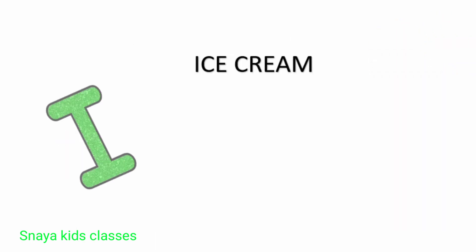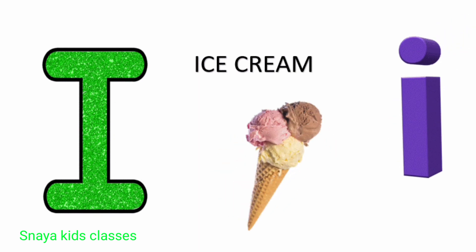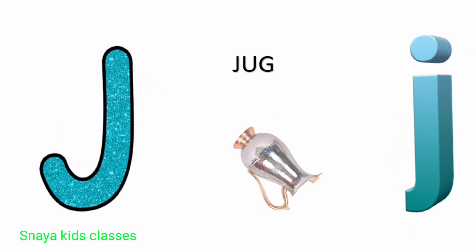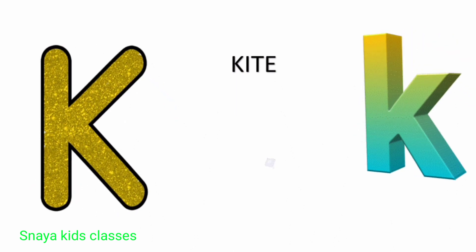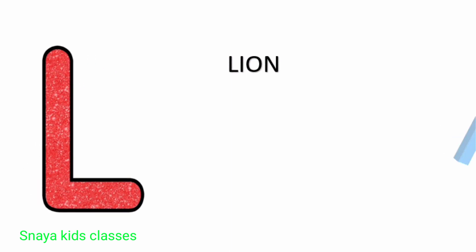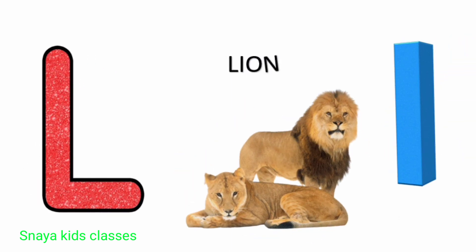I. I for ice cream. J. J for jug. K. K for kite. L. L for lion.